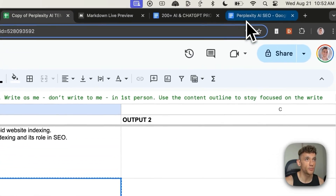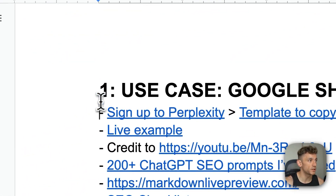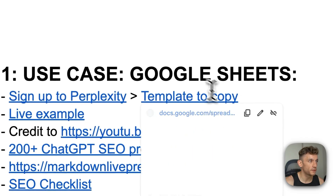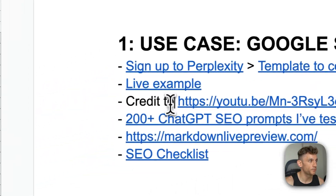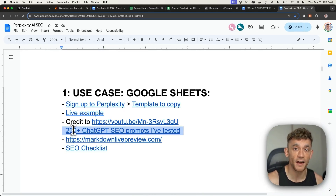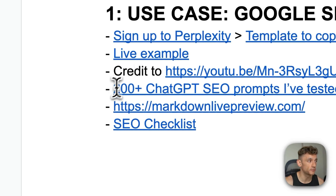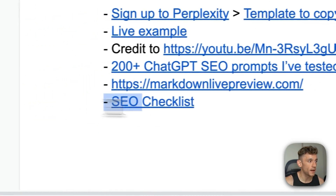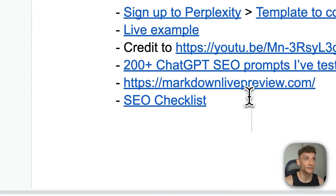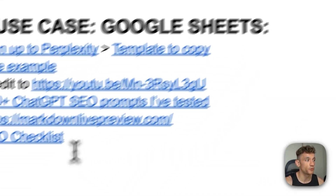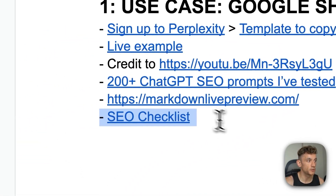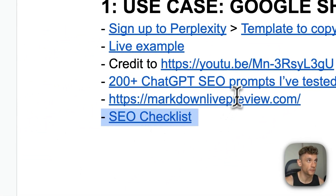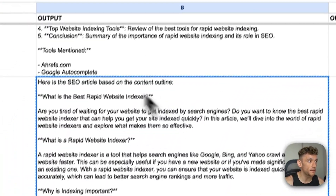Everything I'm talking about today is going to be available to you at the end of the video — the Google Sheets template, 200 other AI SEO prompts I've tested that you can plug into the content, the Markdown live preview link, and also the SEO checklist for editing and quality controlling the content before you publish it. Because you don't want to publish this stuff without quality checking it.